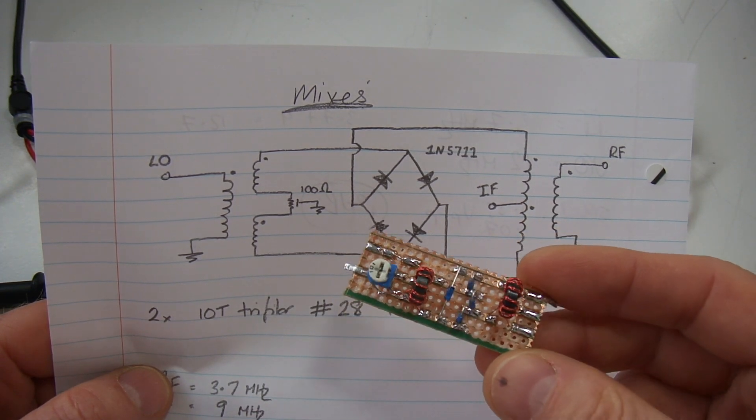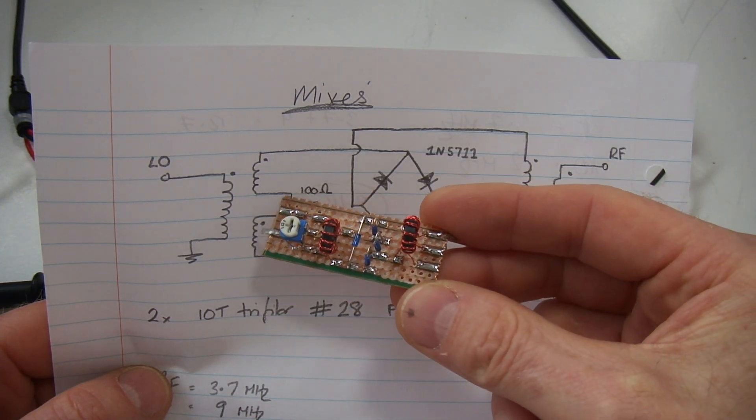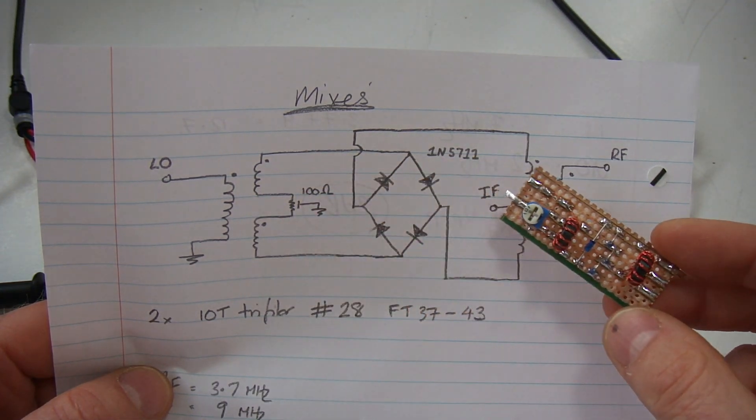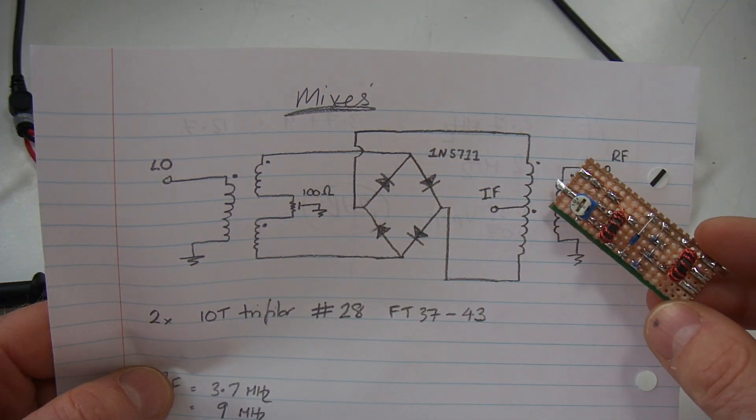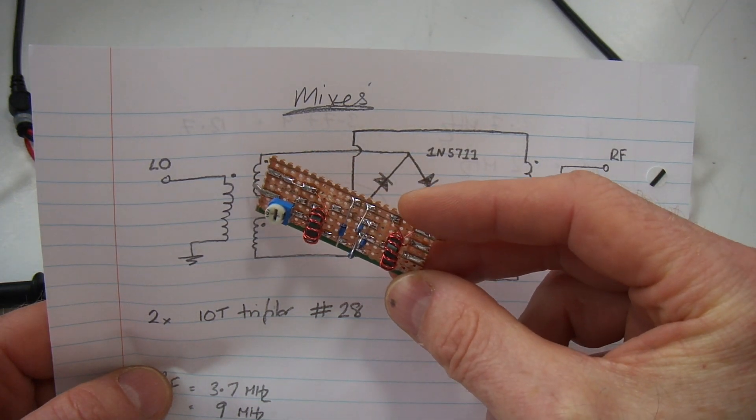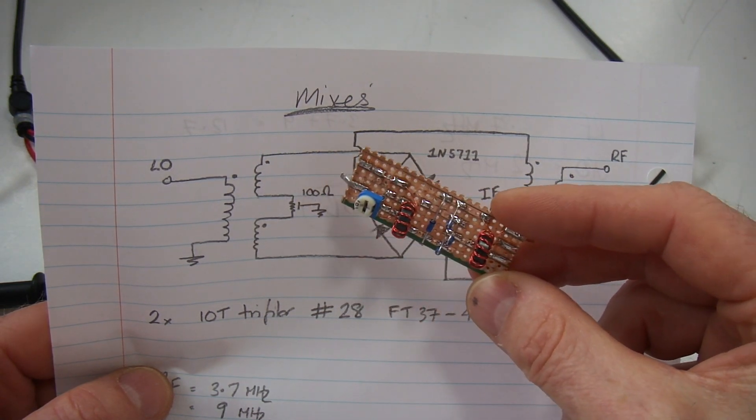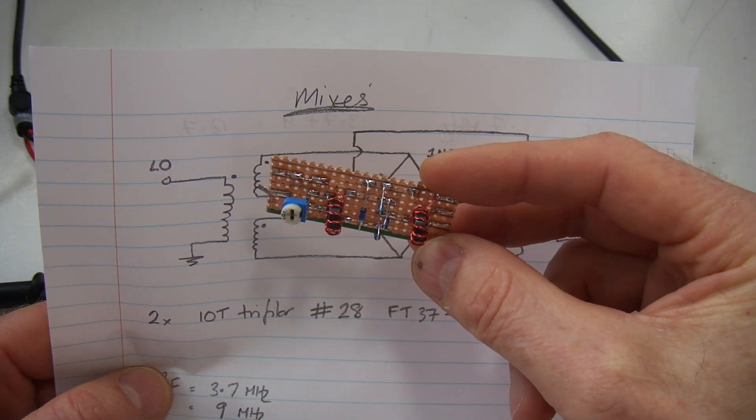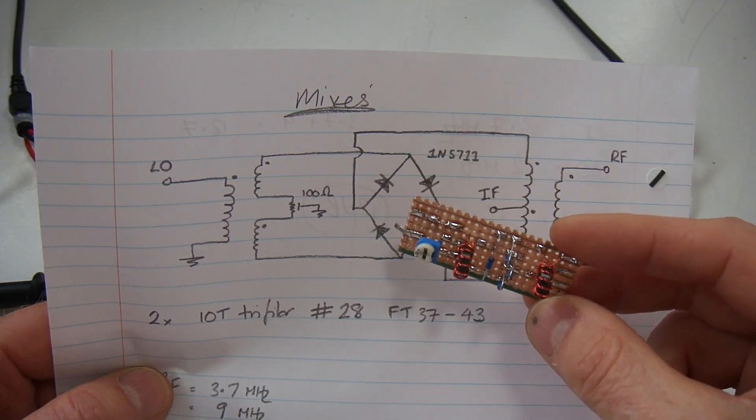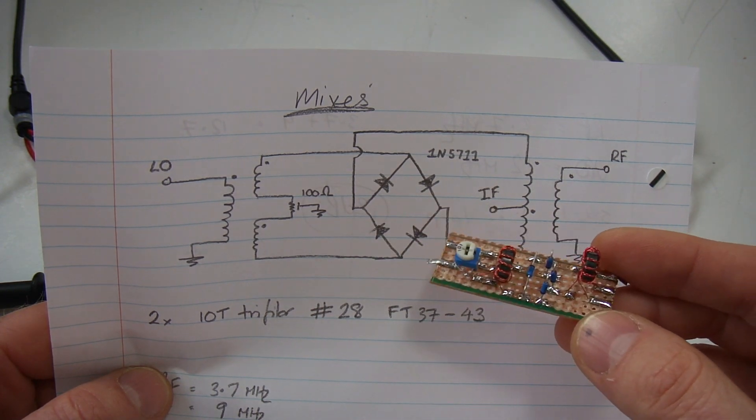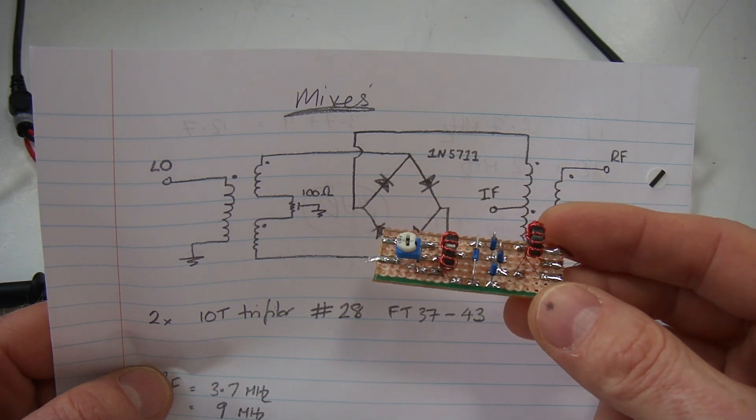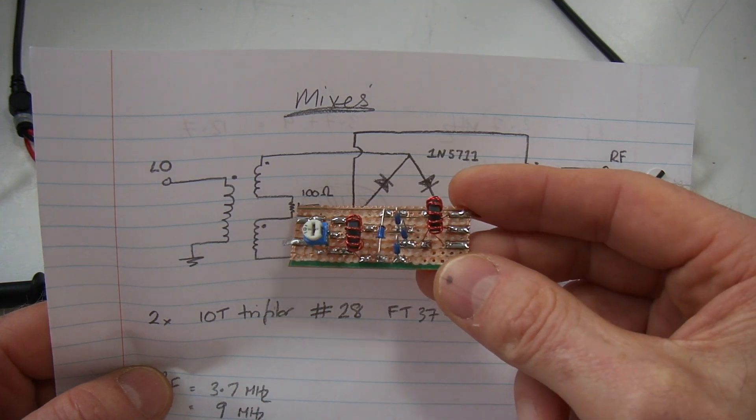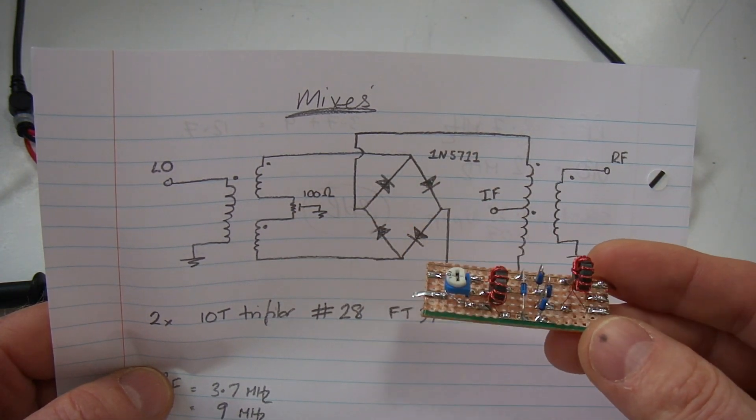On the left hand side I've got a little 100 ohm trim pot. Ordinarily on the SBL1, this center tap would go directly to earth, but having this little 100 ohm pot here I can just balance up the circuit to try and get the best attenuation of the unwanted products using that little trim pot, which you'll see on the scope.